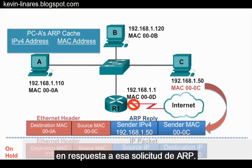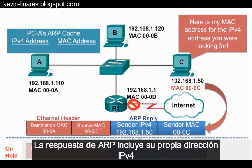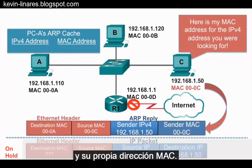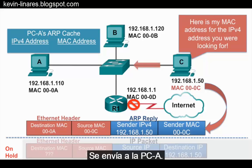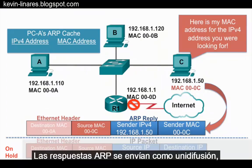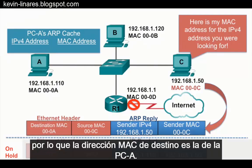The ARP reply includes its own IPv4 address and its own MAC address. It is sent to PCA. ARP replies are sent as a unicast, so the destination MAC address is that of PCA.